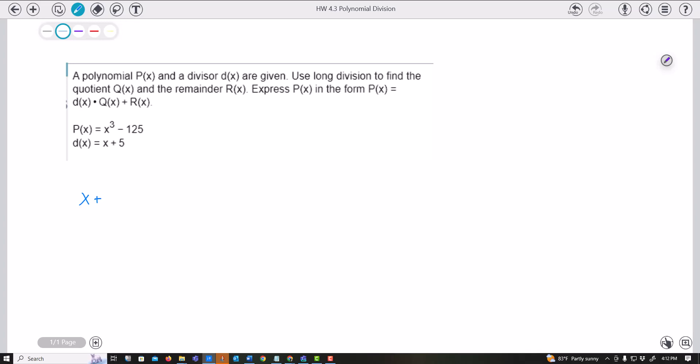The long division way is x plus 5, x cubed, and you need to be sure and have every single power. So I'm going to just put zeros here and then negative 125. So what I'm looking at is this first x, how many times would it go into x cubed? And I think that would go x squared times.